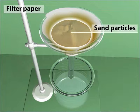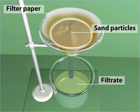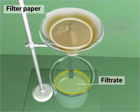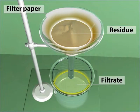The filtered water so obtained is called filtrate, whereas the sand collected over the filter paper is called residue.